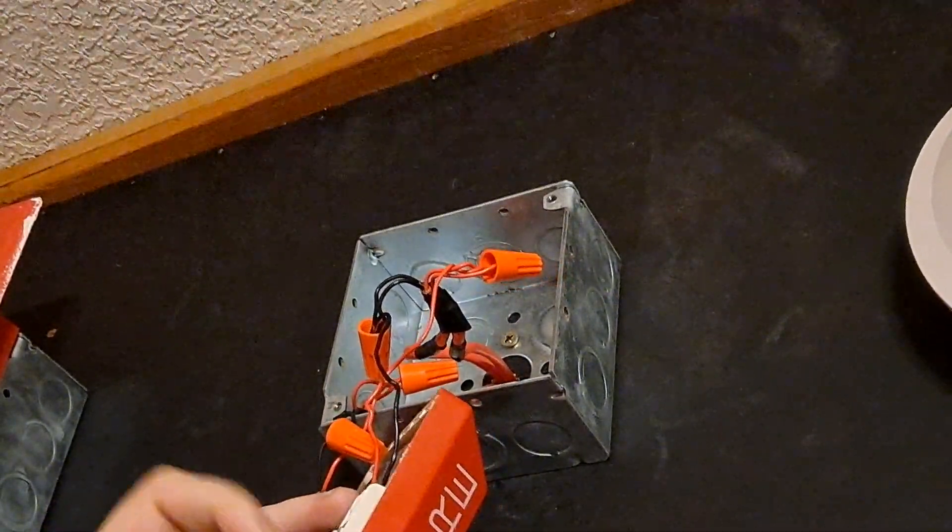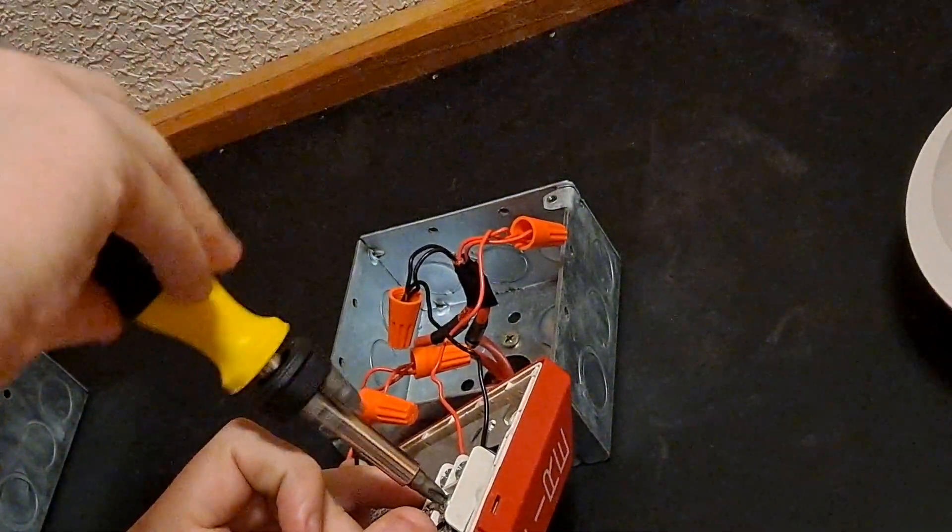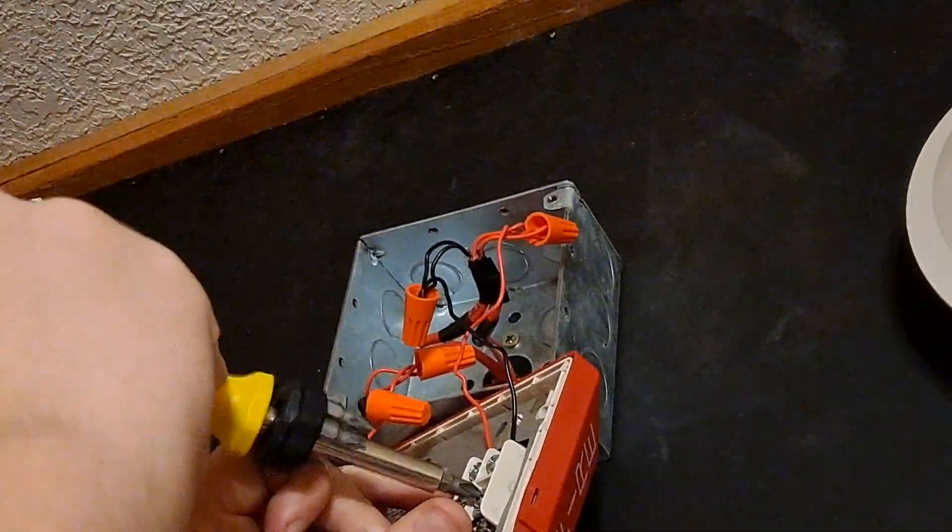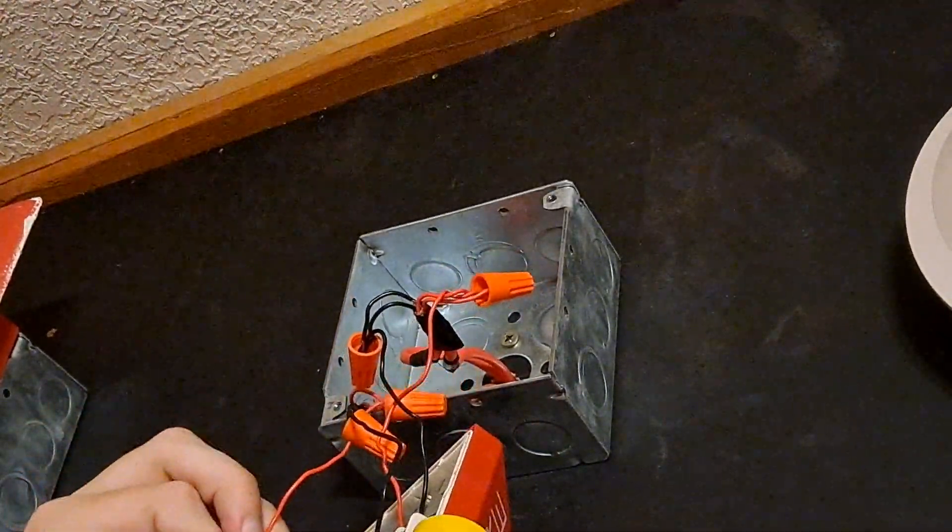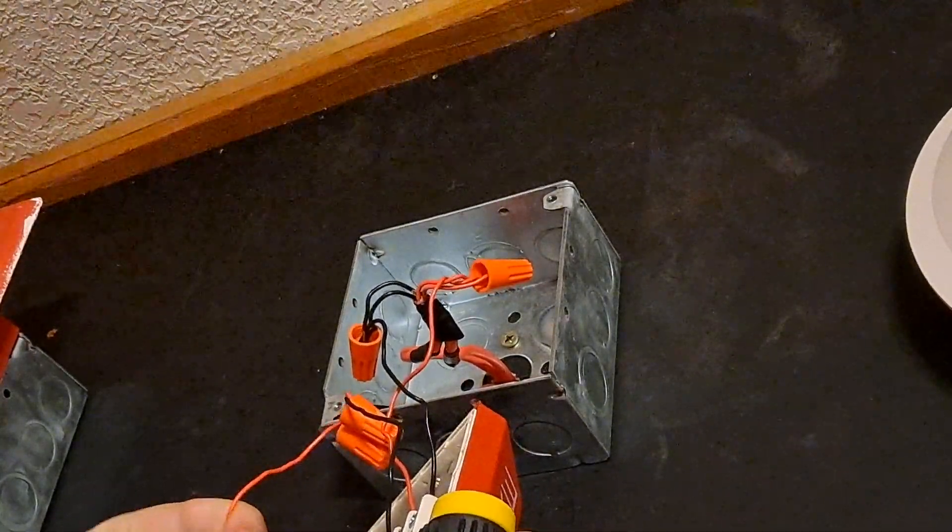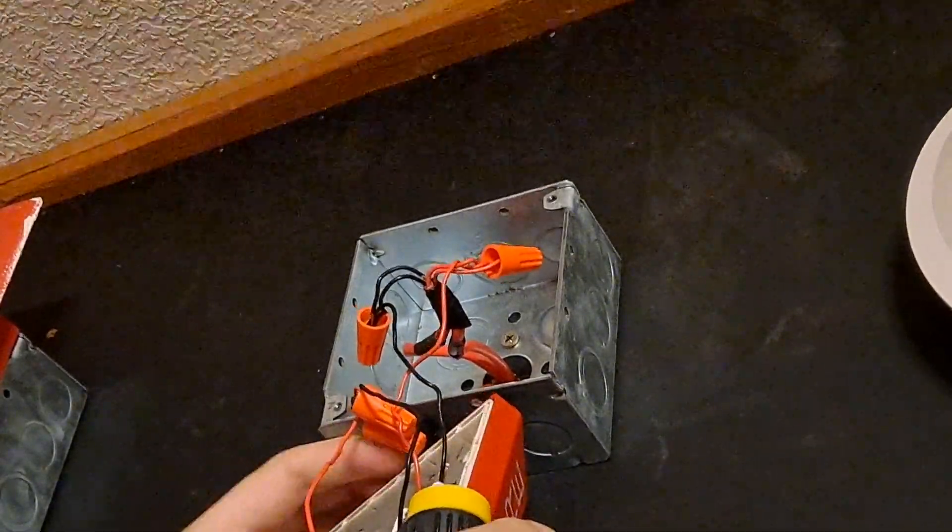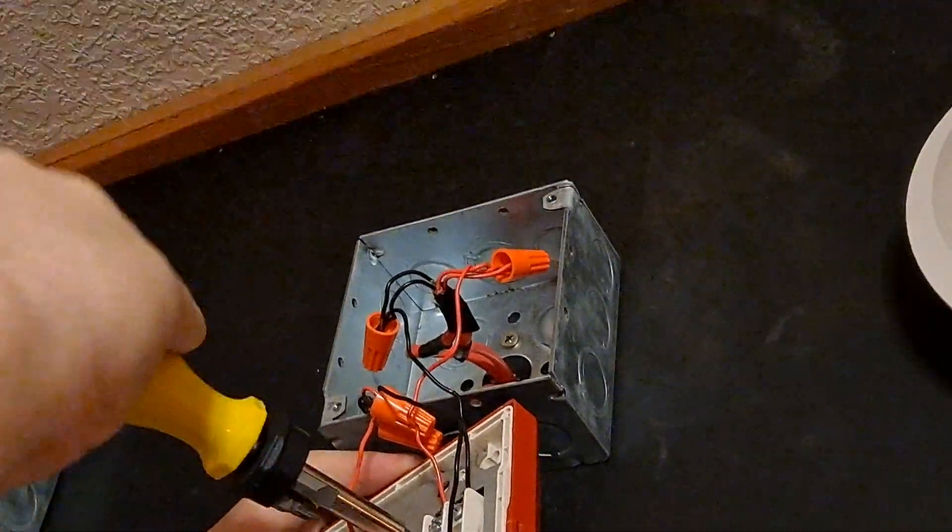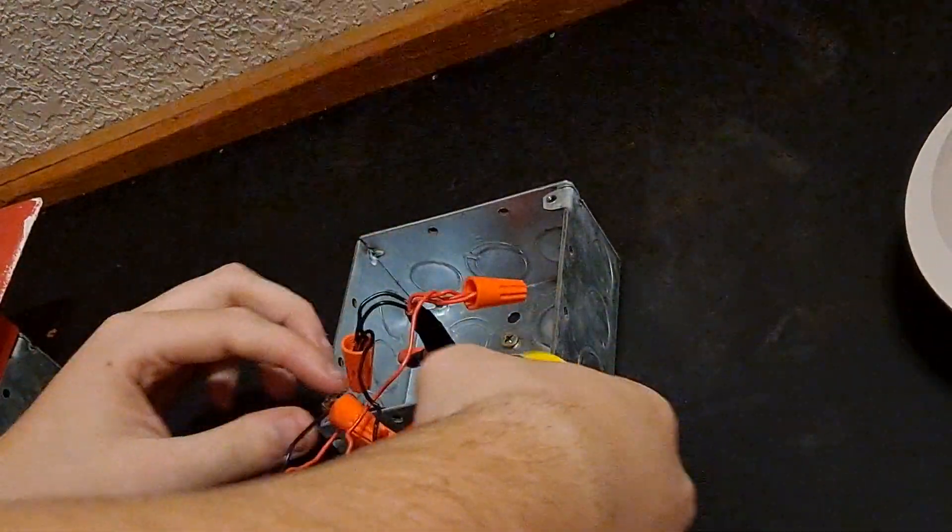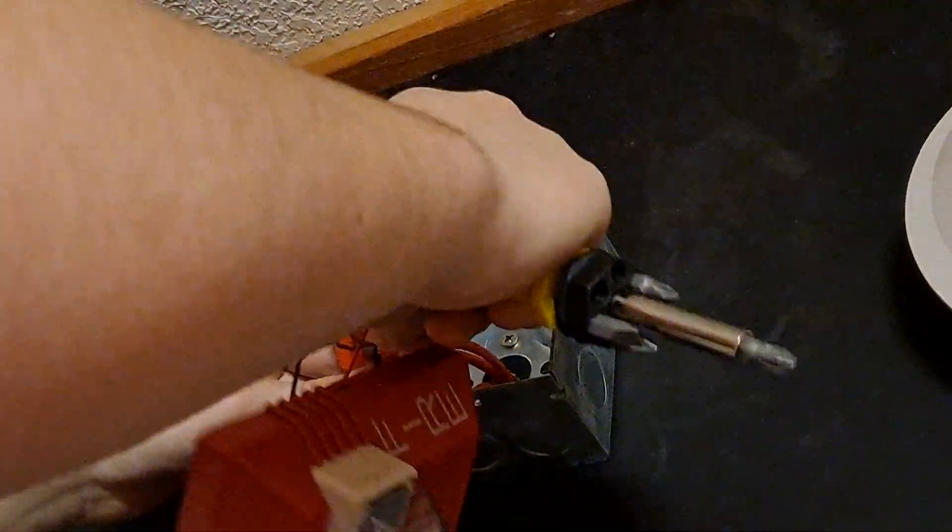So we'll put our strobe wire in first. This time we're starting with the negative because it doesn't really matter what order you do it in. So now the part I'm trying to avoid is avoid touching the negative terminal with this wire.